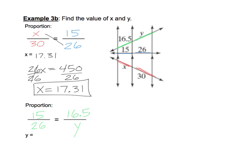And now we can solve that with a cross product. 15 times Y is 15Y. 26 times 16.5 is 429. And now just divide by 15. 429 divided by 15 is 28.6 exactly.